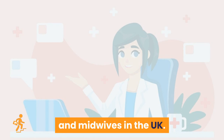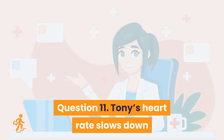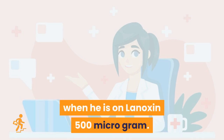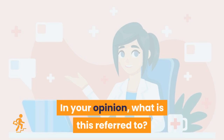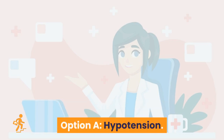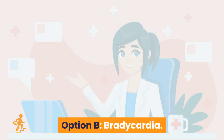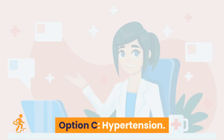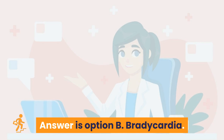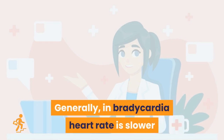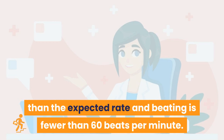Question 11. Tony's heart rate slows down when he is on Lenoxin 500 microgram. What is this referred to? Option A: Hypertension. Option B: Bradycardia. Option C: Hypertension. Option D: Tachycardia. Answer is Option B: Bradycardia. Generally, in bradycardia the heart rate is slower than the expected rate, beating fewer than 60 beats per minute.